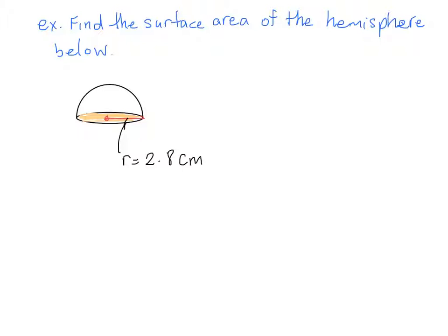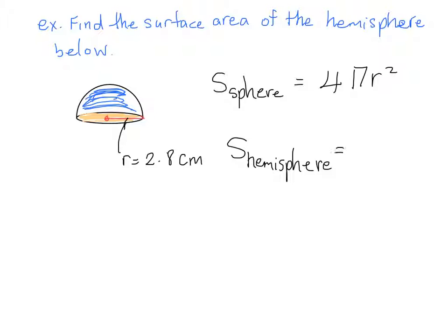So the surface area of an entire sphere, I'll write down from what we just learned, for an entire sphere, surface area is 4πr². But we're only dealing with half a sphere. So the surface area of the hemisphere that you're seeing right here, well, this part that I'm about to shade in blue, this part is half of the whole sphere, which is 2πr².